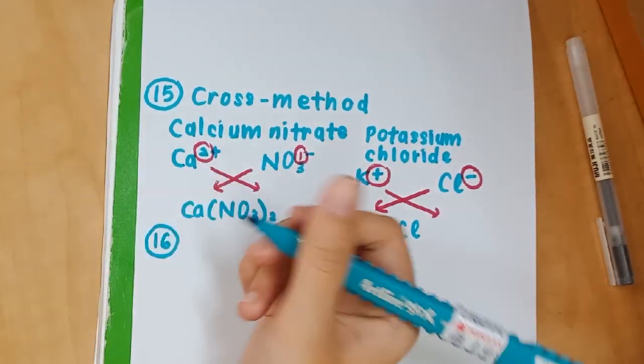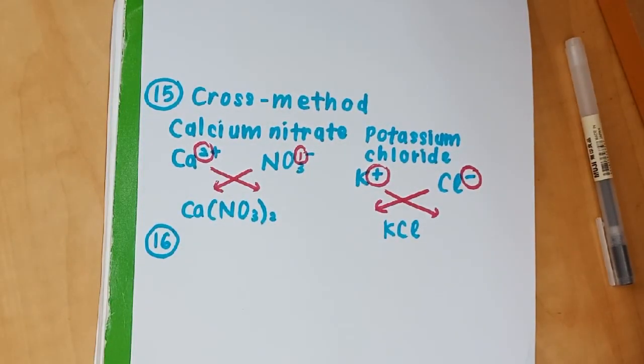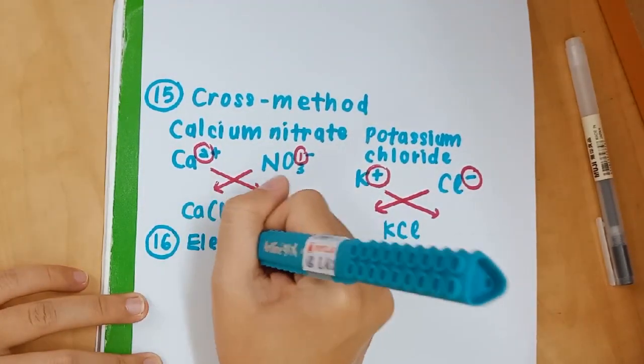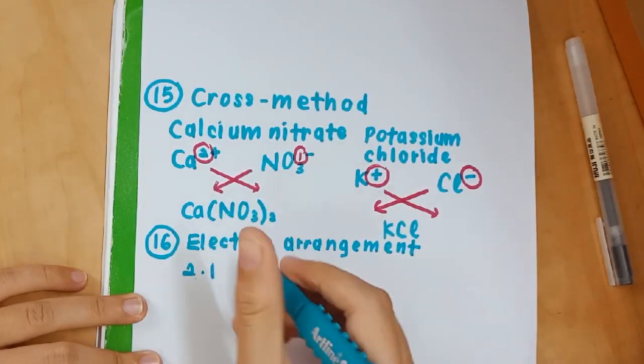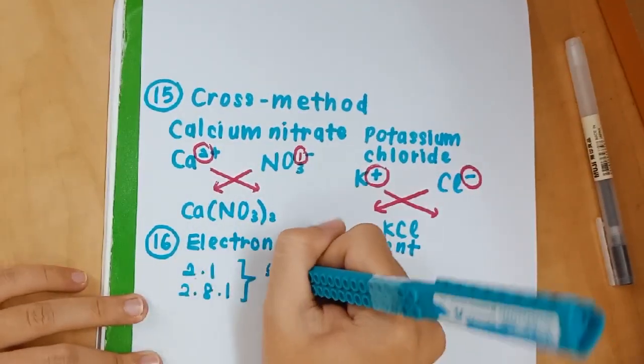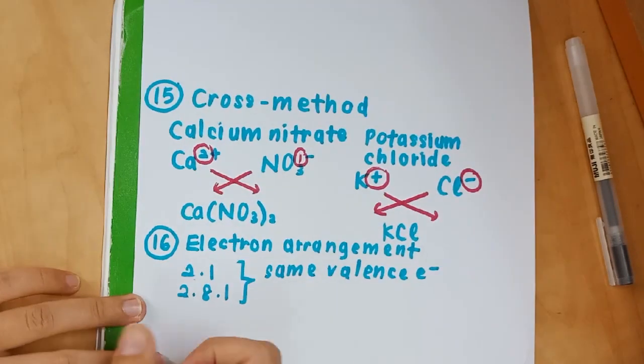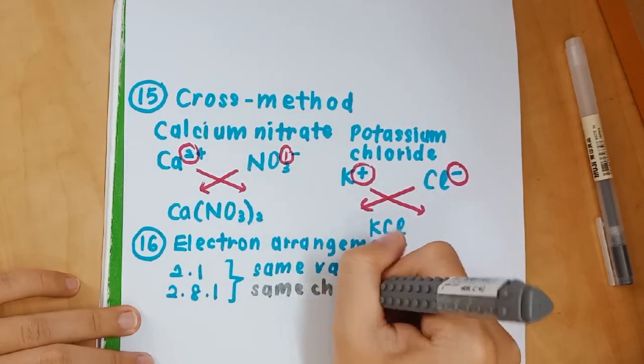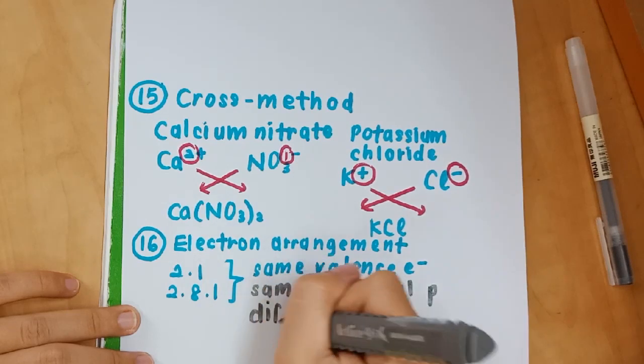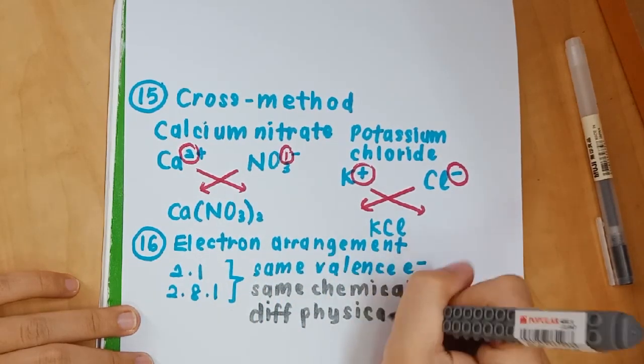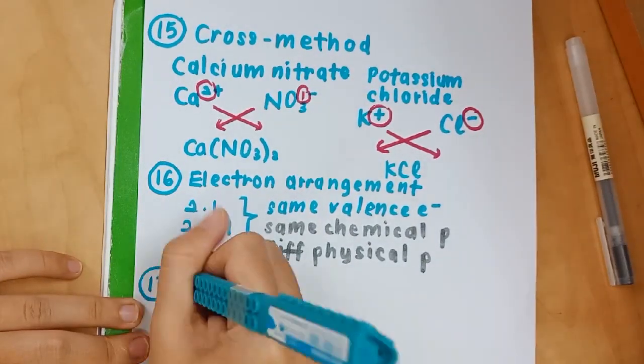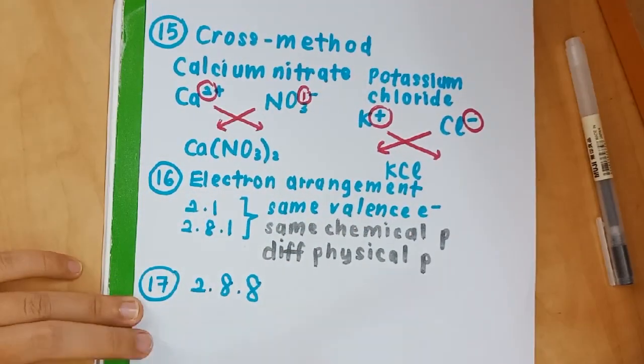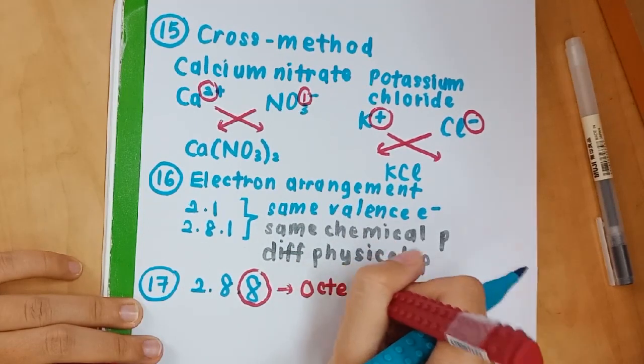Number 16 is the electron arrangement. You need to know how to get the electron arrangement from the number of protons. For example, 2,1 and 2,8,1. The last numbers are both 1, so they have the same number of valence electrons and hence they have the same chemical properties but different physical properties. This is a popular question, so remember this.